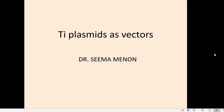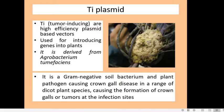Today we will discuss the use of a special type of plasmid which is known as Ti plasmid as a vector. This Ti plasmid is otherwise called as tumor inducing plasmid. They are considered to be high efficiency plasmid based vectors which are usually used for transferring foreign genes into plant cells.